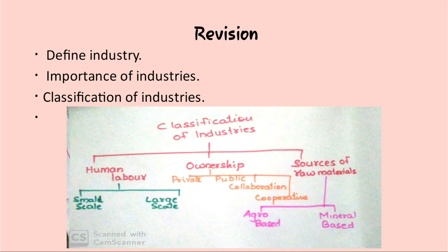Industries are classified on the basis of human labor, ownership, and source of raw material. Under human labor we can divide into large-scale industry and small-scale industry. In large-scale industry we require large machinery, large amounts of resources, and large numbers of people. In small-scale industry we require only small requirements — less number of people and less amount of resources. Under ownership we have four types: public, private, collaborative, and cooperative.